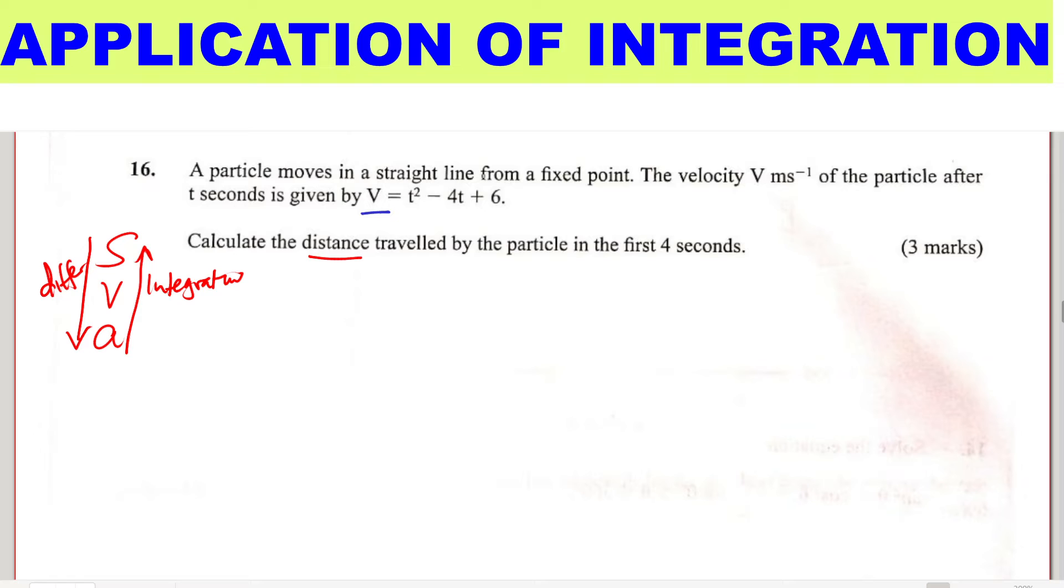So in this question, to get distance, you're going to integrate velocity. And since we're required to get the distance traveled in the first four seconds, we're going to integrate using the limits 0 to 4 seconds. So we integrate from 0 to 4 seconds, then you have the expression for velocity, which is t squared minus 4t plus 6.